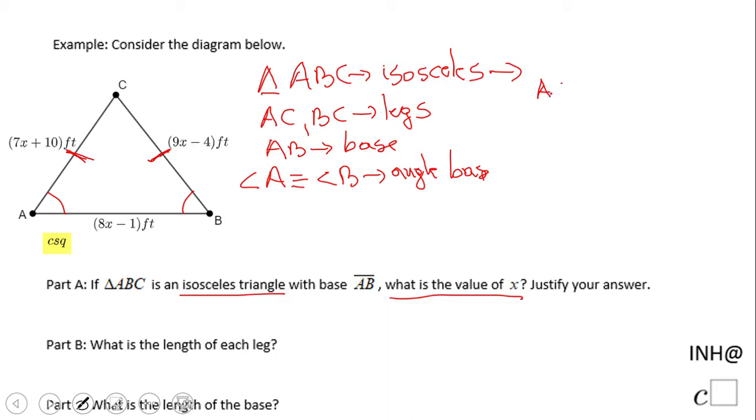Then we have AC congruent to BC, which means in algebra 7x plus 10 equals 9x minus 4, which is an equation of one variable.